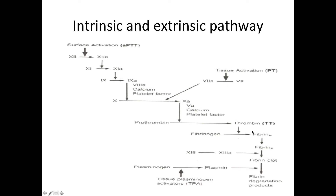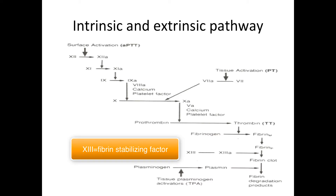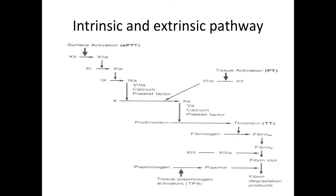Fibrin is initially a fibrin monomer — single units of fibrin. These will go to the primary hemostatic plug and bind there to make it more stable. But they can't do this on their own — they need one more factor: the fibrin stabilizing factor, also known as factor 13. This stabilizes the secondary hemostatic plug.